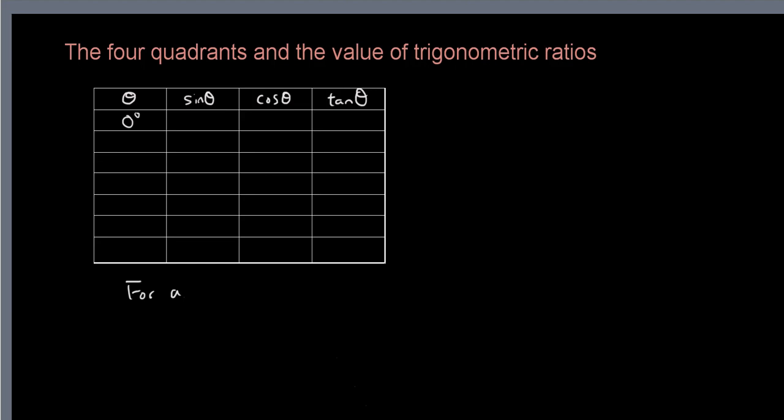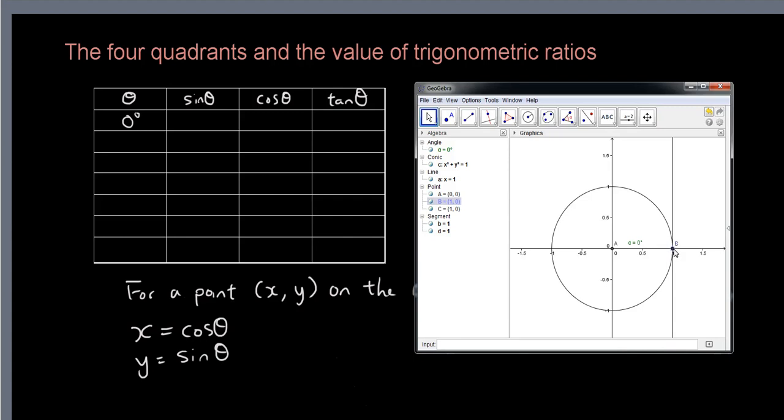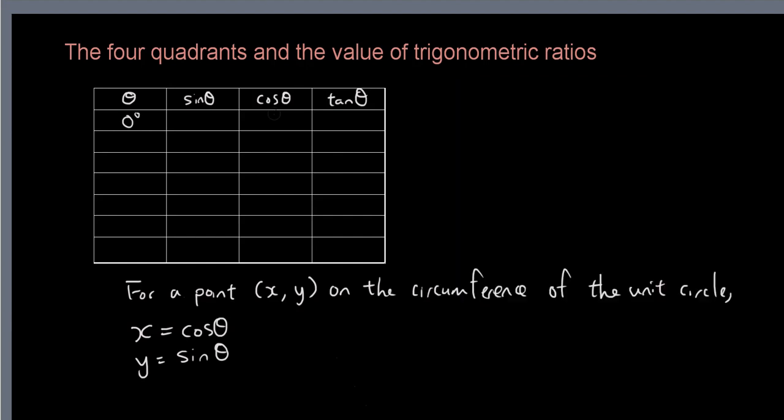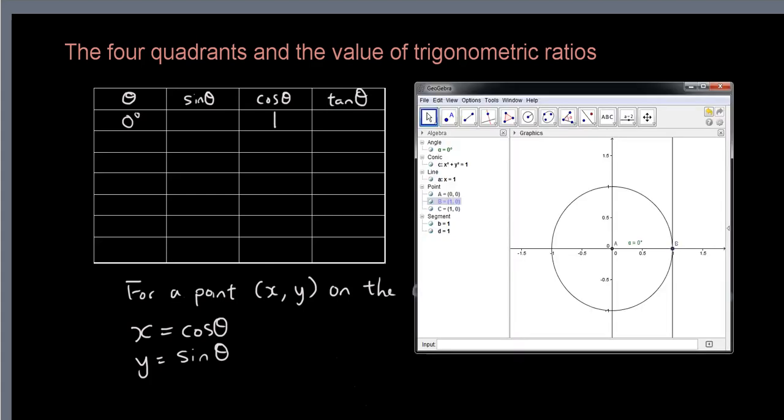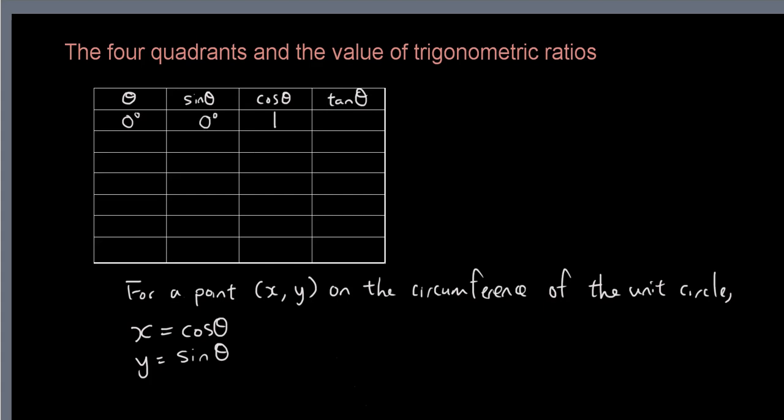For any point (x, y) on the circumference of the unit circle, x is equal to cos theta, y is equal to sin theta. So the x coordinate, cos theta, is equal to 1 because that's what the x coordinate of this point is. The y coordinate, or vertically the y coordinate, is at 0, and the tangent theta, well, 0 divided by 1 is obviously 0.